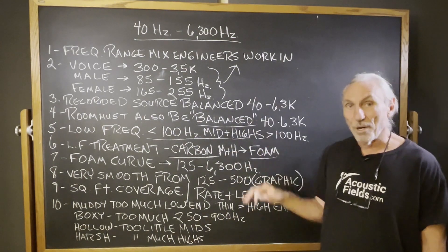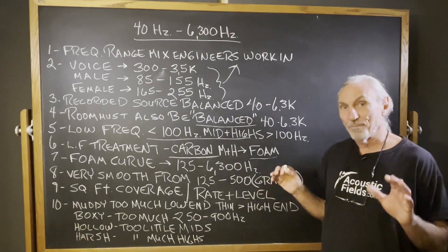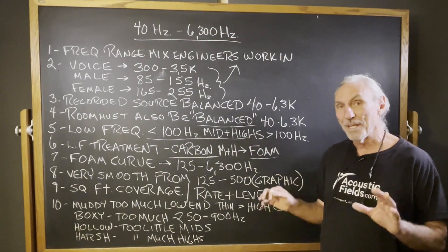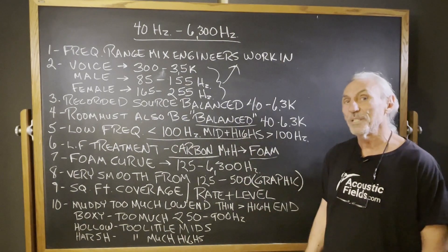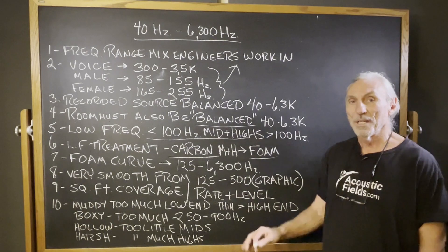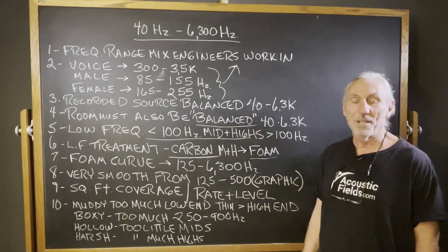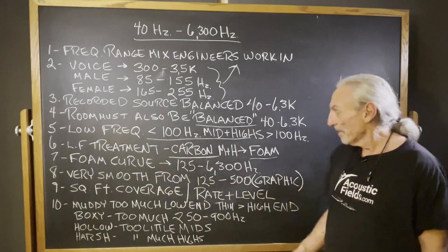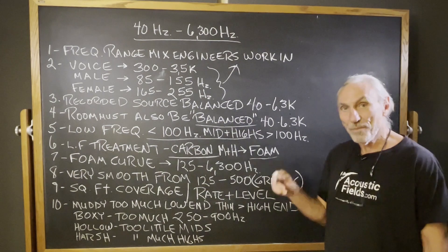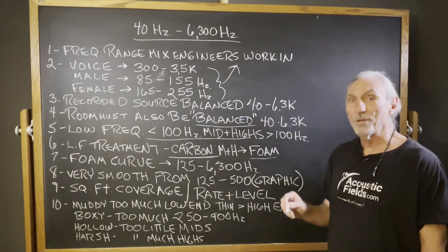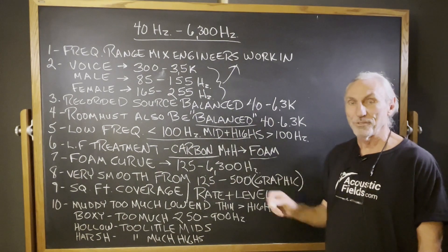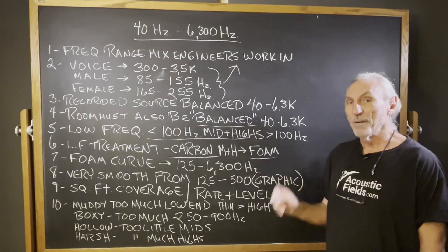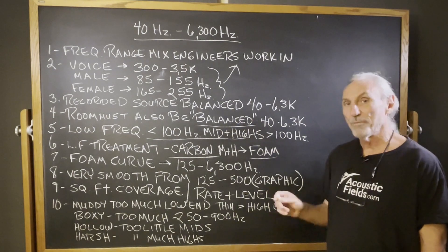We use our carbon to get that 30 to 100 cycle issue as balanced as we can, and then we add our foam. The curves on our carbon products — you can see them on our website — are very close to the curves of our foam.